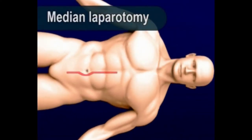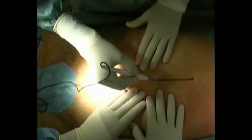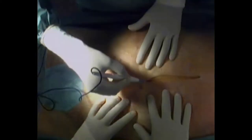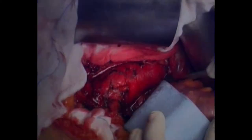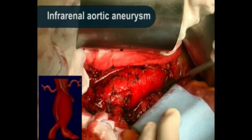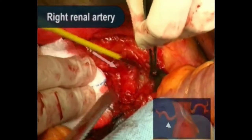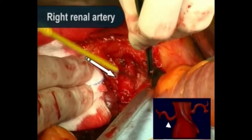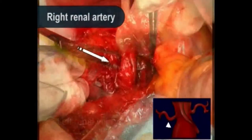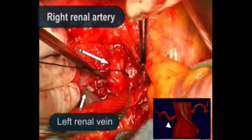Through a median laparotomy and a transperitoneal access, the infrarenal aorta was prepared. Both renal arteries and the SMA are isolated at their origin after mobilizing the left renal artery.